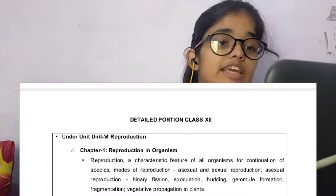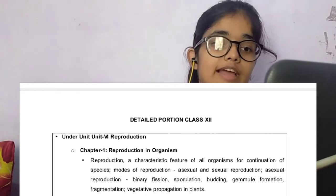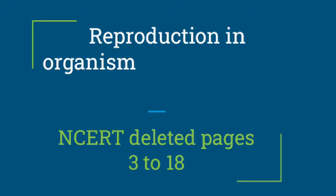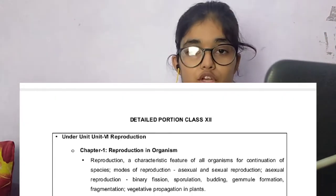In the 12th class, let's first talk about Reproduction. There are a total of 4 chapters. Chapter number 1, that is, Reproduction in Organisms, is completely removed — including basic concepts of reproduction, asexual and sexual reproduction, and modes of reproduction. The next three chapters — Sexual Reproduction in Flowering Plants, Human Reproduction, and Reproductive Health — are fully studied. There is no reduction in this unit; the weightage remains 14 marks.